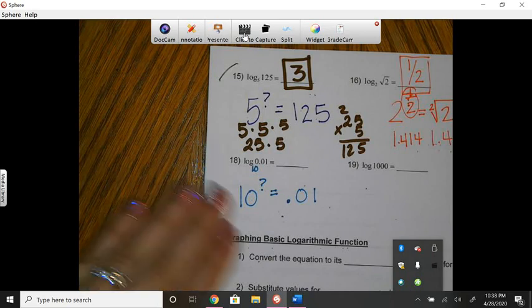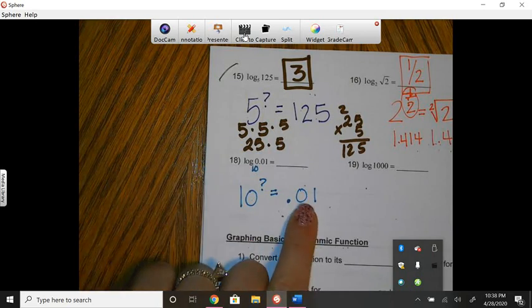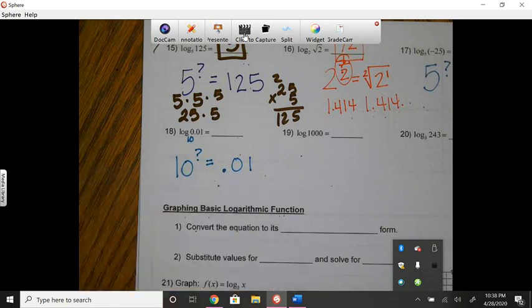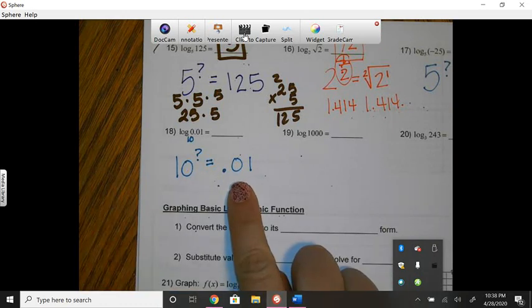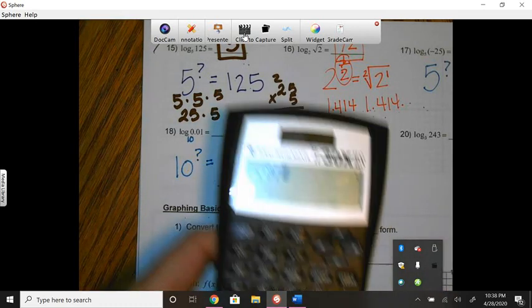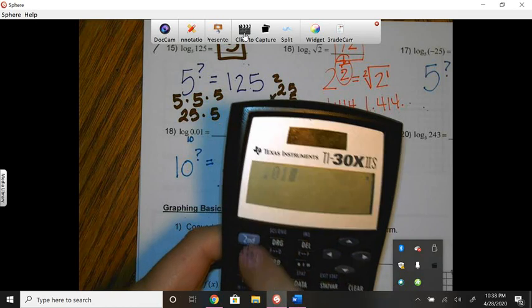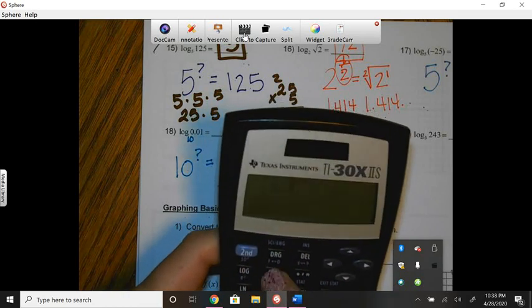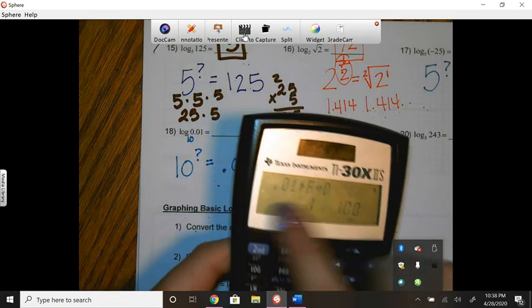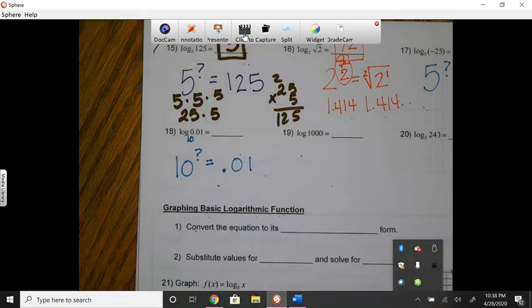Now, for some of you, this could be confusing to have a decimal here. Well, you've learned in previous math classes how to change a decimal to a fraction. And if you've forgotten, you could always use your calculator and say, what is 0.01? And tell it to change it to a fraction form. Well, it's 1 hundredths. Now, I don't need a calculator for that because, again, I know how to change a decimal to a fraction.